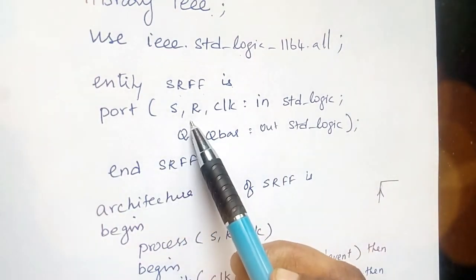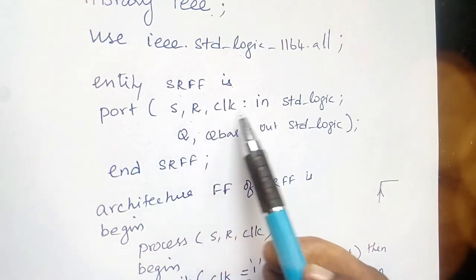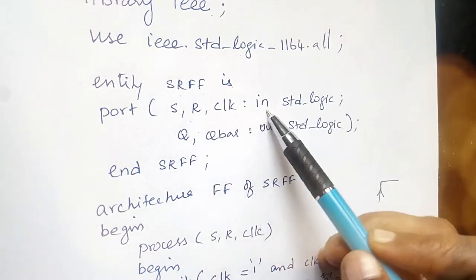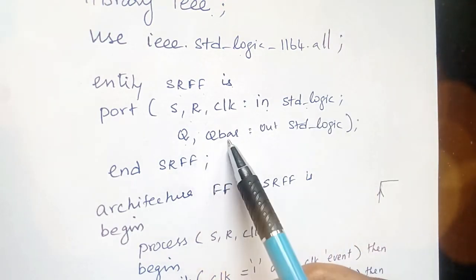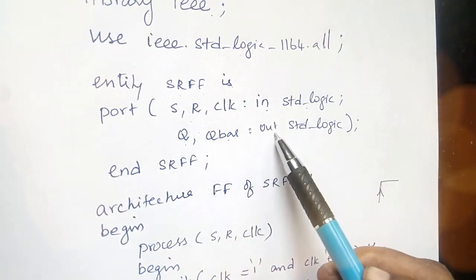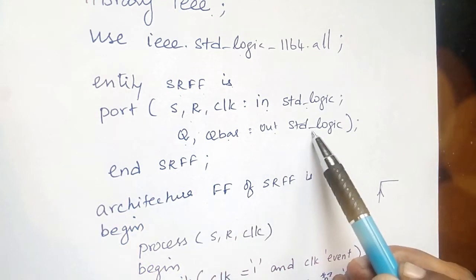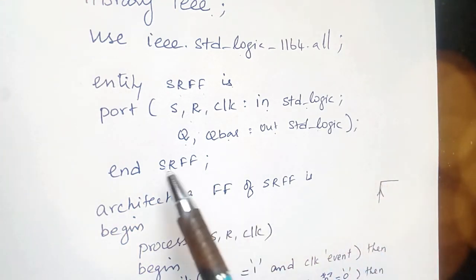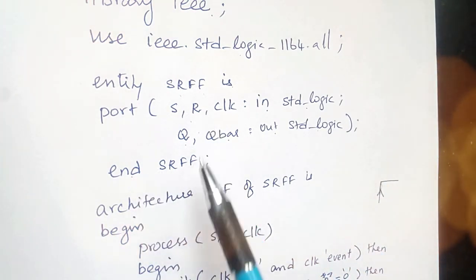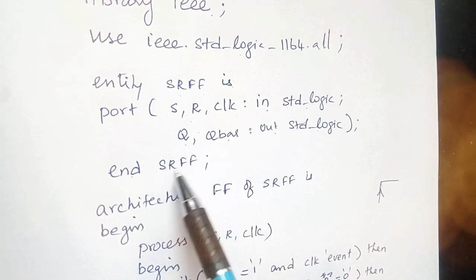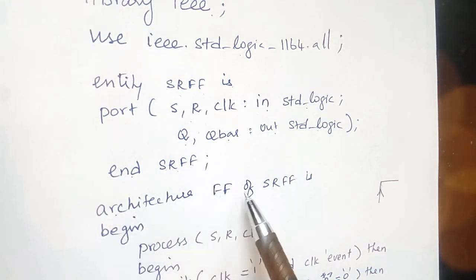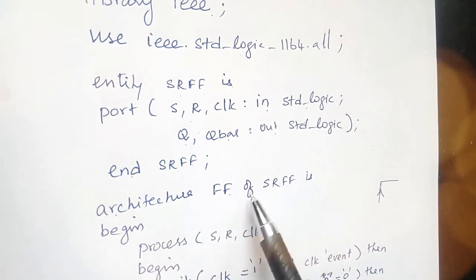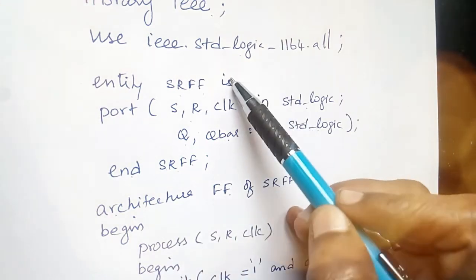Within the entity we list all the inputs and outputs. The inputs are S, R, and clock with data type std_logic, and the outputs are Q and Q bar also of data type std_logic. We then end the entity, naming it 'sr_ff', and declare the architecture with the architecture name followed by 'of' and this entity name 'sr_ff'.